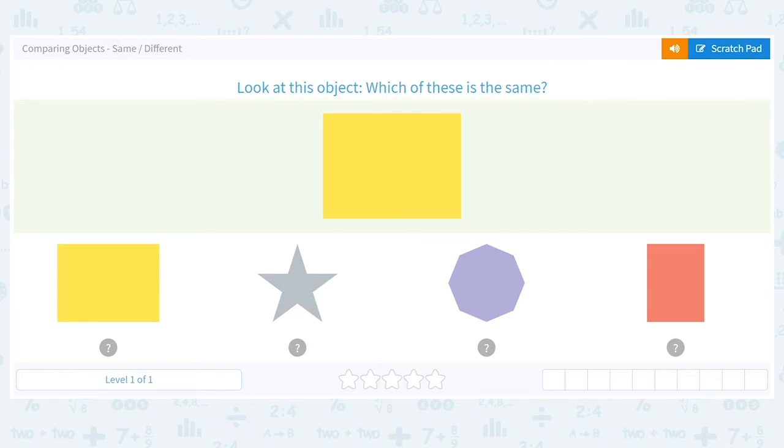Today, we're going to be comparing objects, and we want to compare objects and see if they are the same or if they are different. So the directions say, look at this object. Which of these is the same as the object up here? Do you know what shape this object is?